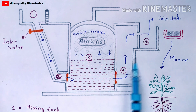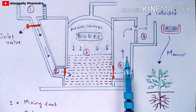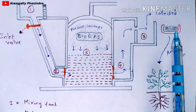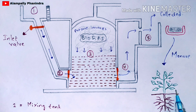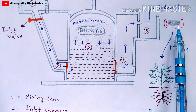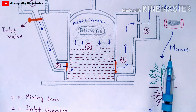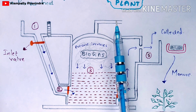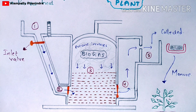Once the outlet chamber fills, the slurry enters the overflow tank. From the overflow tank, the total slurry is collected. This collected slurry acts as manure for plants and is added to fields to help plants grow properly and healthily. Meanwhile, the produced biogas is collected and stored in cylinders using pipes, then supplied to markets.